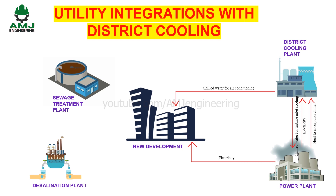Let us go to the heat rejection path. District cooling plants typically use cooling towers to cool the chillers' condensers. Cooling towers require makeup water because some water is lost through evaporation, drift, and blowdown processes.